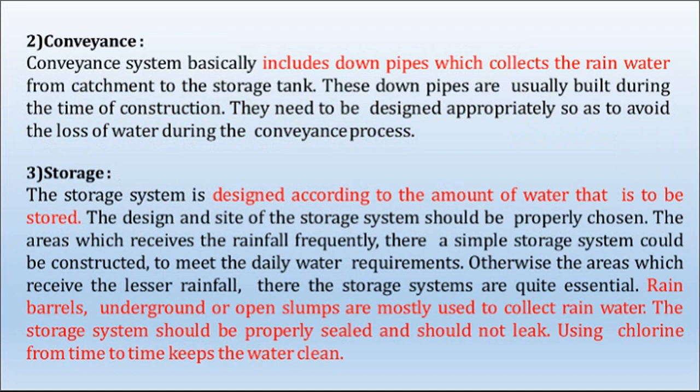The conveyance system basically includes downpipes which collect rainwater from the catchment to the storage tank. These downpipes are usually built during construction and need to be designed appropriately so as to avoid loss of water during the conveyance process.